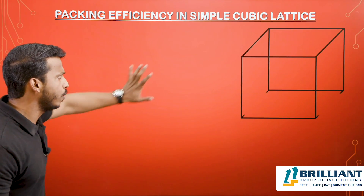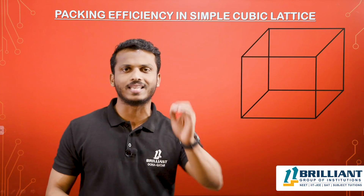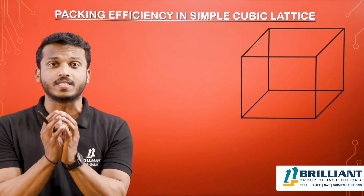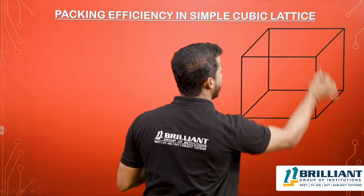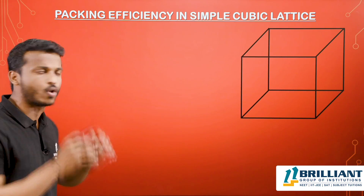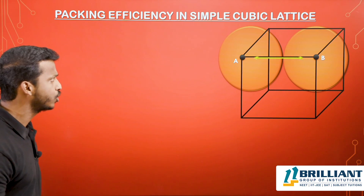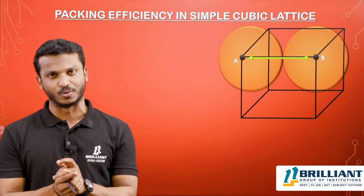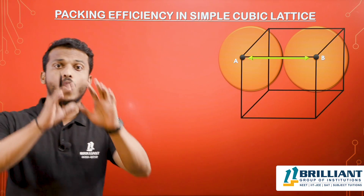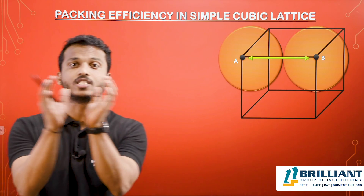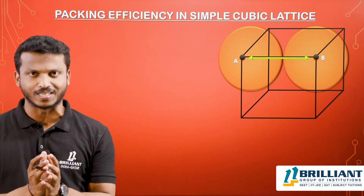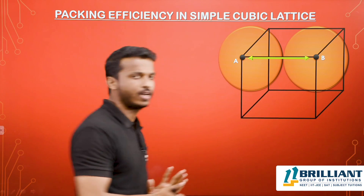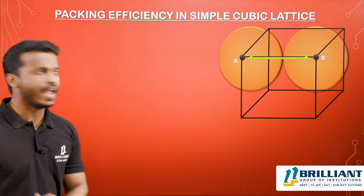Let us consider a simple cubic unit cell. In a simple cubic system, the constituent particles — the spheres — are present at the corners. A cube has eight corners total. Here we consider two spheres of equal size to illustrate the arrangement. The center-to-center distance between the two spheres is labeled as AB, represented by the small letter a.